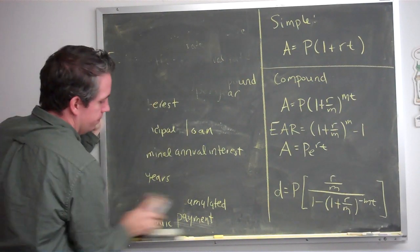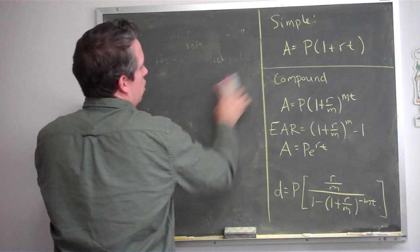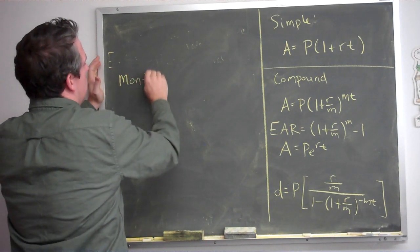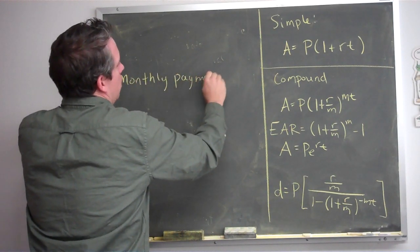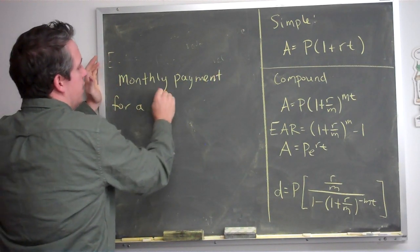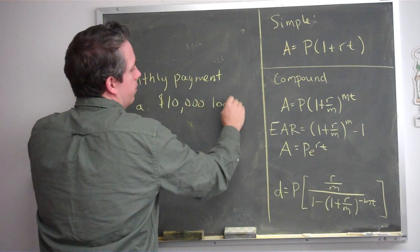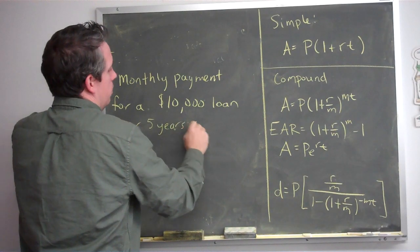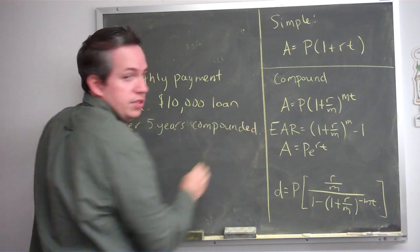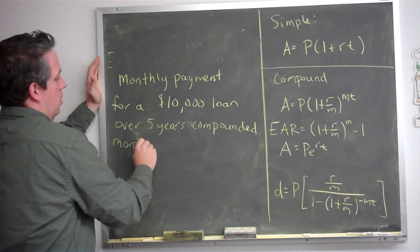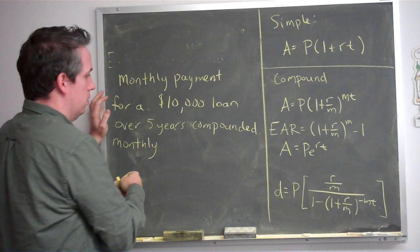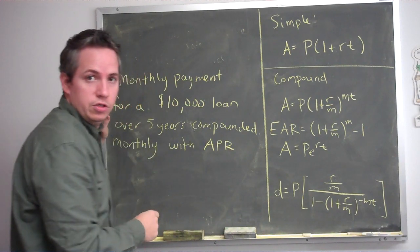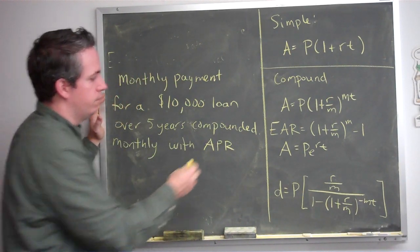Everything else is pretty much the same as before. Suppose you're going to buy a car and take out a $10,000 loan — what's the monthly payment? Let's do it over five years, compounded monthly. The compounding needs to match the payment frequency, so monthly compounded. With an APR — nominal annual interest rate or annual percentage rate — of 2.9%.